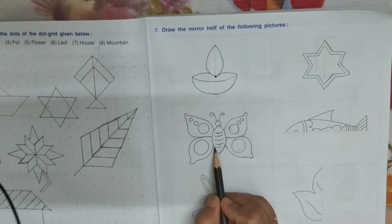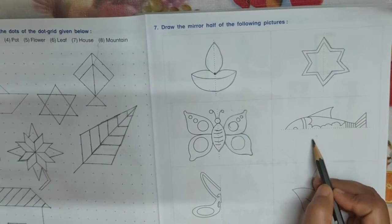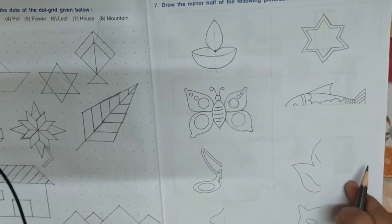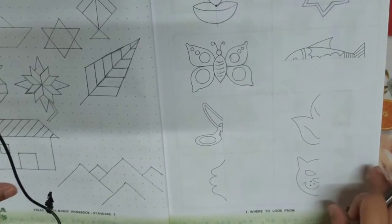Similarly, butterfly. Other fish is there. You have to complete this fish also, this one also. Leaf, this design, and face of the cat.